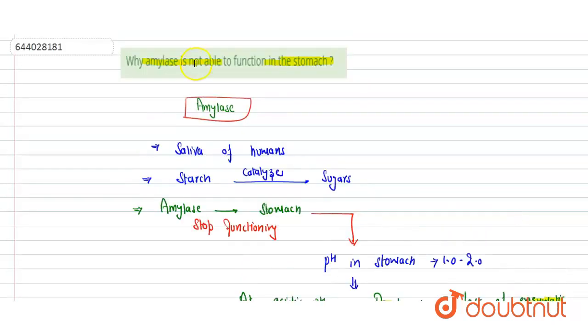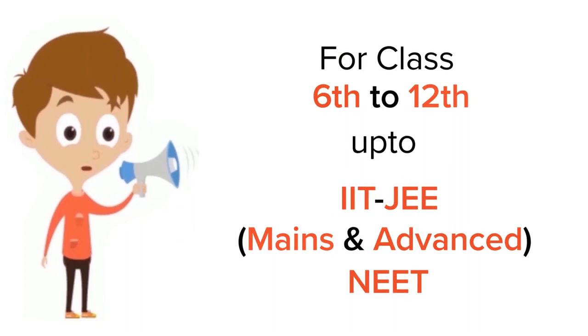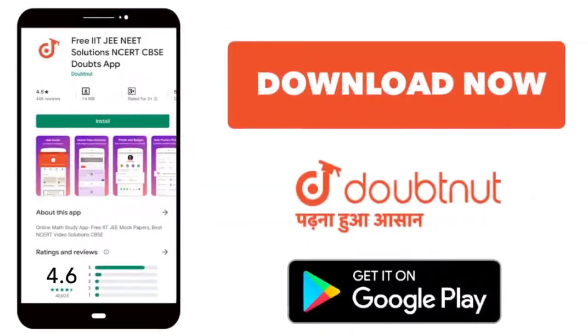So this is the reason behind that. Hope you get it. Thank you. For class 6-12, IIT-JEE, and NEET level, trusted by more than 5 crore students, download Doubtnet app today.